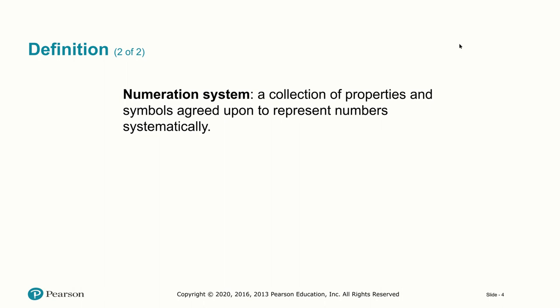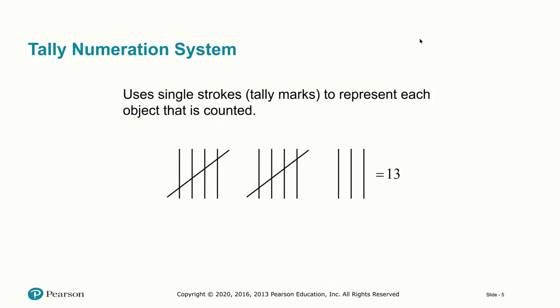A numeration system is basically a collection of properties and symbols agreed upon to represent numbers in a systematic way. That's why you have different numeration systems — people got together, agreed on what the system would look like, and then used it consistently. One of the most basic is the tally numeration system, where you put a mark for each number counted, and once you reach 5, you put a diagonal line through. So here you would have 5, 10, and then 3 more, representing 13.